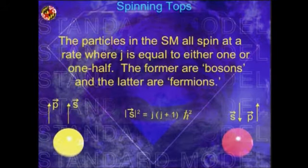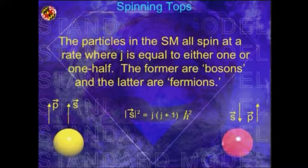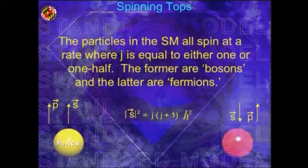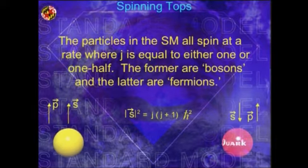So all of these particles behave like spinning tops. We physicists have a number called h-bar. And we can measure the rate at which these particles spin in terms of h-bar. For all of the matter particles, which are called fermions, this number j turns out to be one-half. For all the force carriers, which we call boson, this number j turns out to be the number one. So there's already a dichotomy in the structure of the universe.